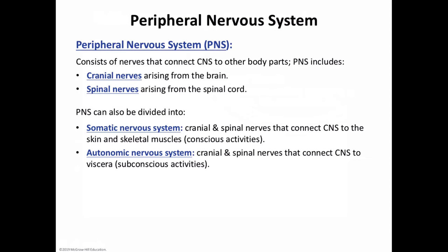ALS has no cure. However, there is a drug called Riluzole which may extend time until respiratory difficulty. Assisted breathing devices including a ventilator may be used to sustain life. Although about half of people with ALS experience some cognitive decline, the mind remains sharp in many. About 10% of ALS cases are inherited due to mutations in any of several genes — it is not just a single gene mutation. An environmental trigger may combine with inherited susceptibility to cause the disease.